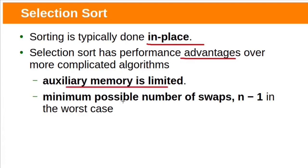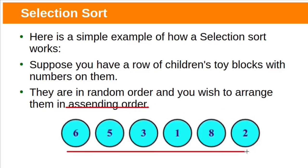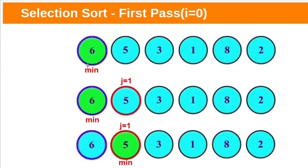Selection sort requires a minimum number of swaps — n minus one in the worst case. Here is a simple example to understand how selection sort works. Suppose you have an array of elements in random order and you wish to arrange them in ascending order. Initially this entire list is considered as an unsorted sublist or unsorted subarray. We need to find the smallest element in the unsorted subarray. Let's see how the minimum element can be found within this unsorted subarray.